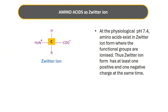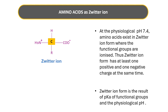The zwitterion form has at least one positive and one negative charge at the same time, which shows the ampholyte nature of amino acids. Now if you are asked what is the reason for the zwitterion form and ampholyte nature of amino acids, your answer should be: the pKa of functional groups and the physiological pH.